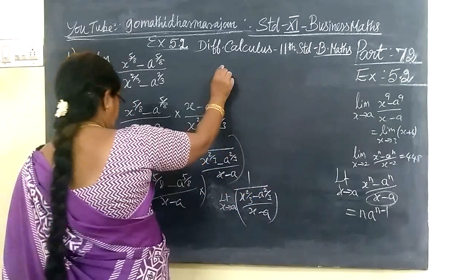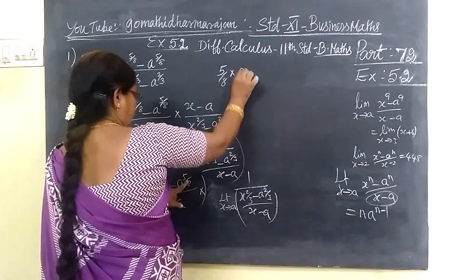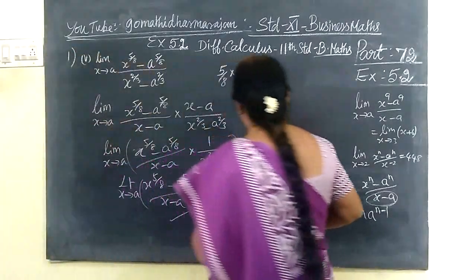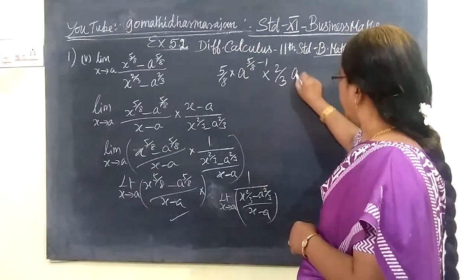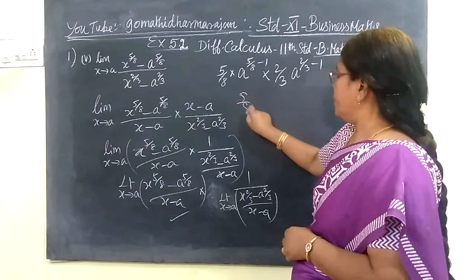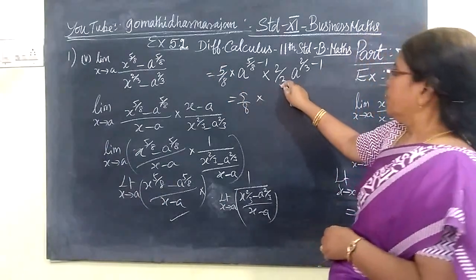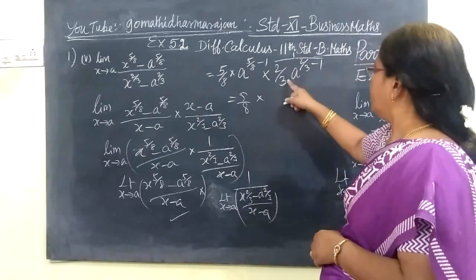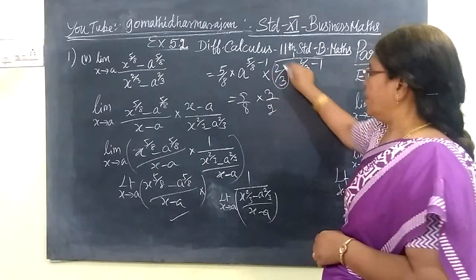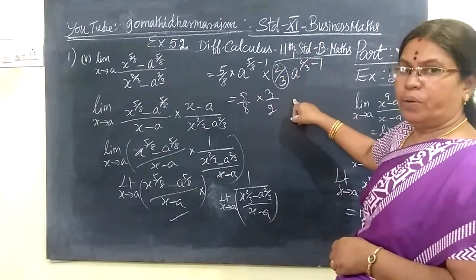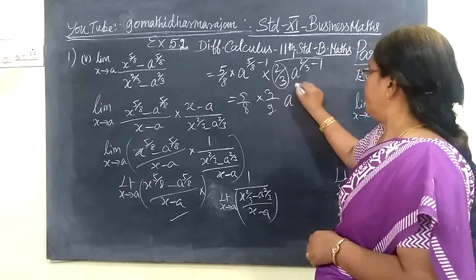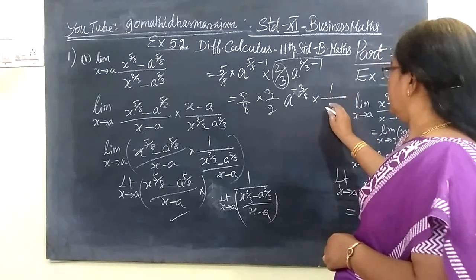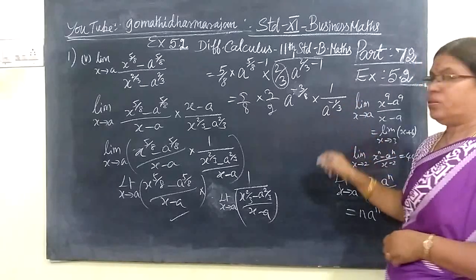Then minus x, minus x is equal, then minus x into A. Applying n into a power n minus 1, so 5 by 8 — this is 5 by 8. This is what we need to do. You can add 1 or subtract 1. You can add 2 by 3, you can add 2 by 3, and add 1 by 3. So you write it in that form.